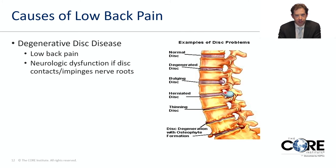Degenerative disc disease is very common. This diagram shows different variations of disc arthritis — a normal disc at the top, a slightly degenerated disc below, and then bulging or herniated discs where part of the disc protrudes outward and can compress nerve roots, causing pain down the legs. With significant disc arthritis, people can develop osteophytes, which are bony overgrowths occurring between the segments.